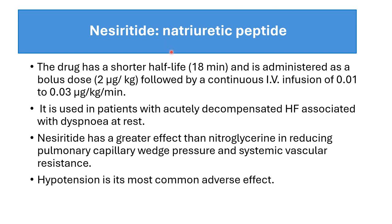Nesiritide is a natriuretic peptide used in patients with acutely decompensated heart failure associated with dyspnea at rest. It has a short half-life of 18 minutes and is administered as a bolus dose of 2 micrograms per kg followed by IV infusion of 0.01 to 0.03 micrograms per kg per minute. It has a greater effect than nitroglycerin in reducing pulmonary capillary wedge pressure and systemic vascular resistance. Hypotension is the most common adverse effect.